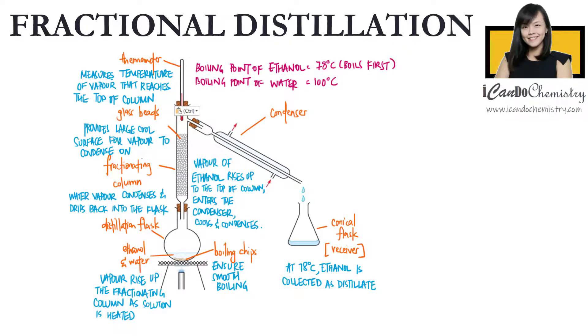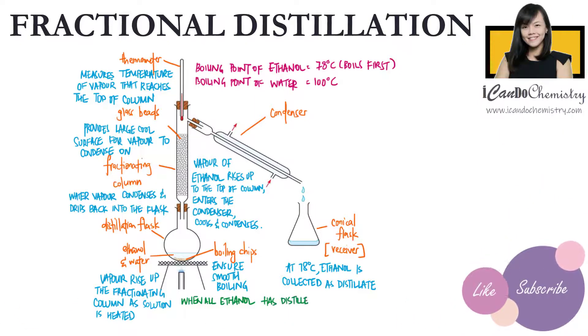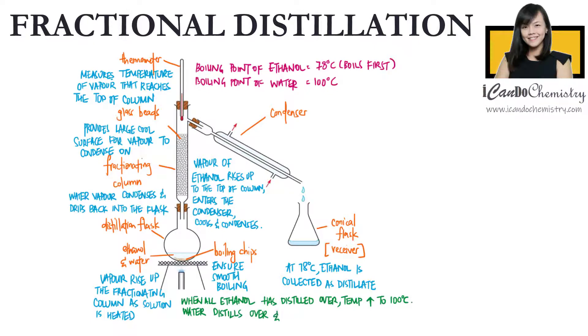Water, which has a higher boiling point, will remain in the flask until almost all the ethanol has been distilled. When all the ethanol has distilled over, the temperature in the thermometer will rise up to 100 degrees Celsius, which is the boiling point of water. At this temperature, water distills over and will be collected separately.